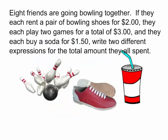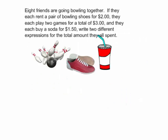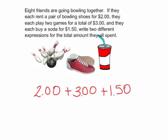Let's try this problem. Eight friends are going bowling together. If they each rent a pair of bowling shoes for $2, they each play 2 games for a total of $3, and they each buy a soda for $1.50, write 2 different expressions for the total amount they all spent. How much did one of them spend? They had $2 for bowling shoes plus $3 for the games and $1.50 for the soda. This is the amount of money that one person would have spent. Of course we have 8 friends, so I will take that amount and multiply it by 8. This is an expression for the total amount of money they all spent.